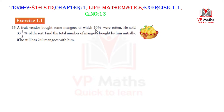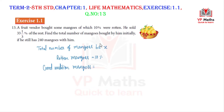Let the total number of mangoes be x. The fruit vendor has 10% rotten mangoes, and 33 and 1/3 percentage of the rest were sold, leaving a balance of 240 mangoes. We need to find x, the total number of mangoes.